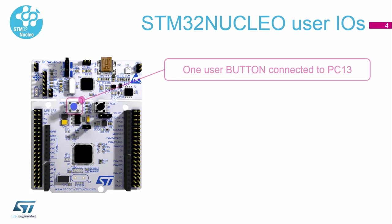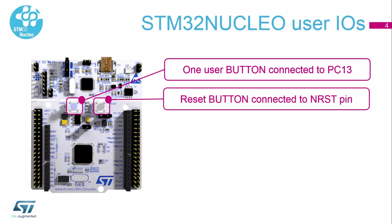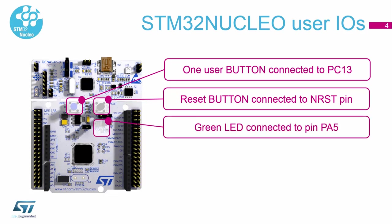We can find here the blue button which is connected to PC13 and we can use it for our applications. The black button is the reset button — in case that you want to start the program again, you can press the reset button. And then there is the green LED which is connected to pin PA5.